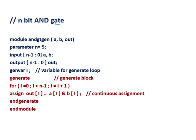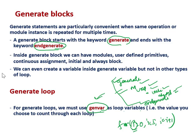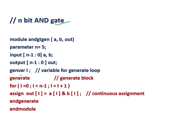Here is an example: an N-bit AND gate using a generate block. The module has parameter N equal to 5, input, output, and we declare 'genvar' as the loop variable. In a normal for loop you would use 'integer i', but here we use the system-defined 'genvar i'. Then we write 'generate' and 'endgenerate' to form the generate block, and inside the generate block we can have a for loop.